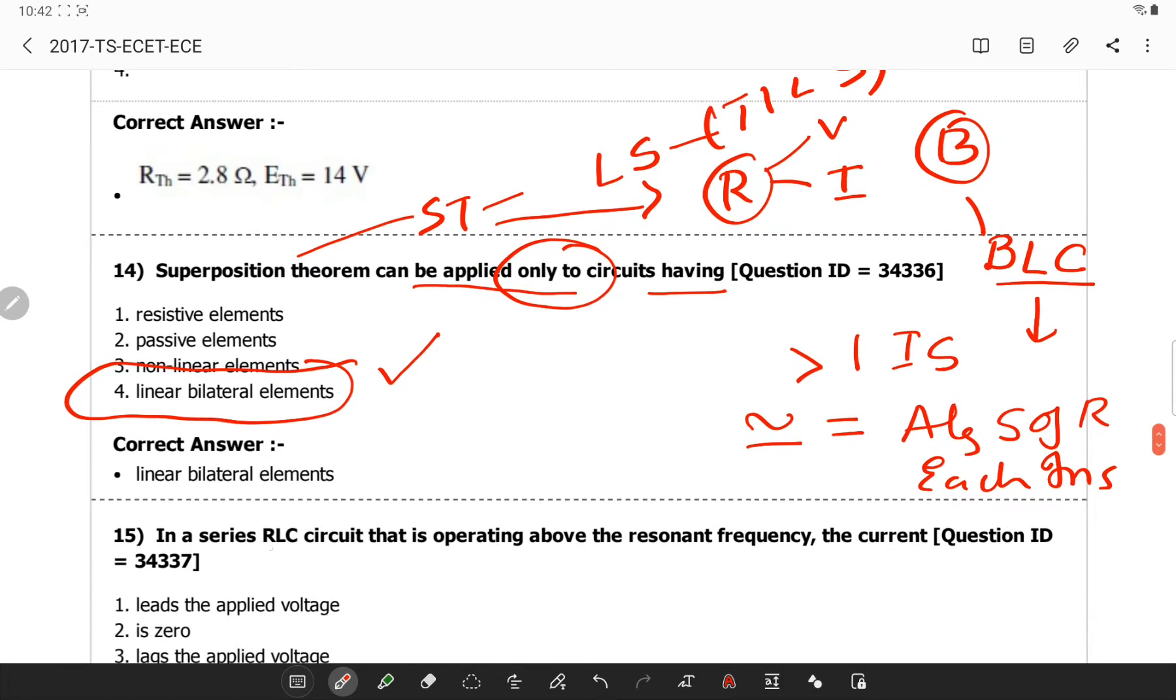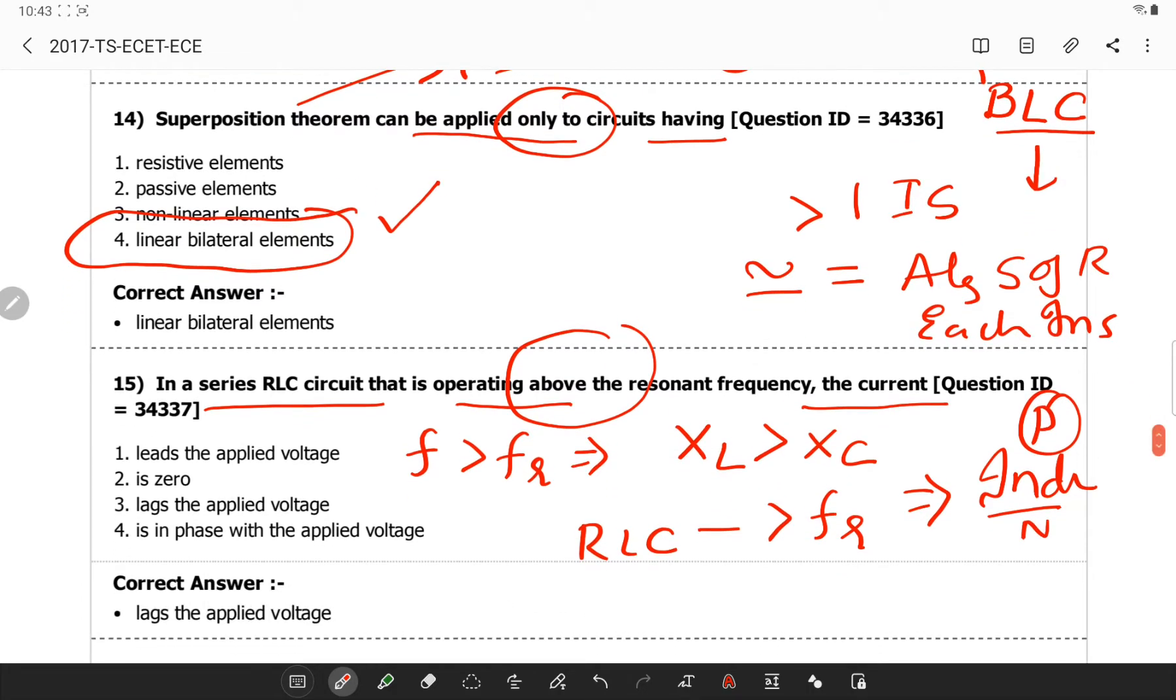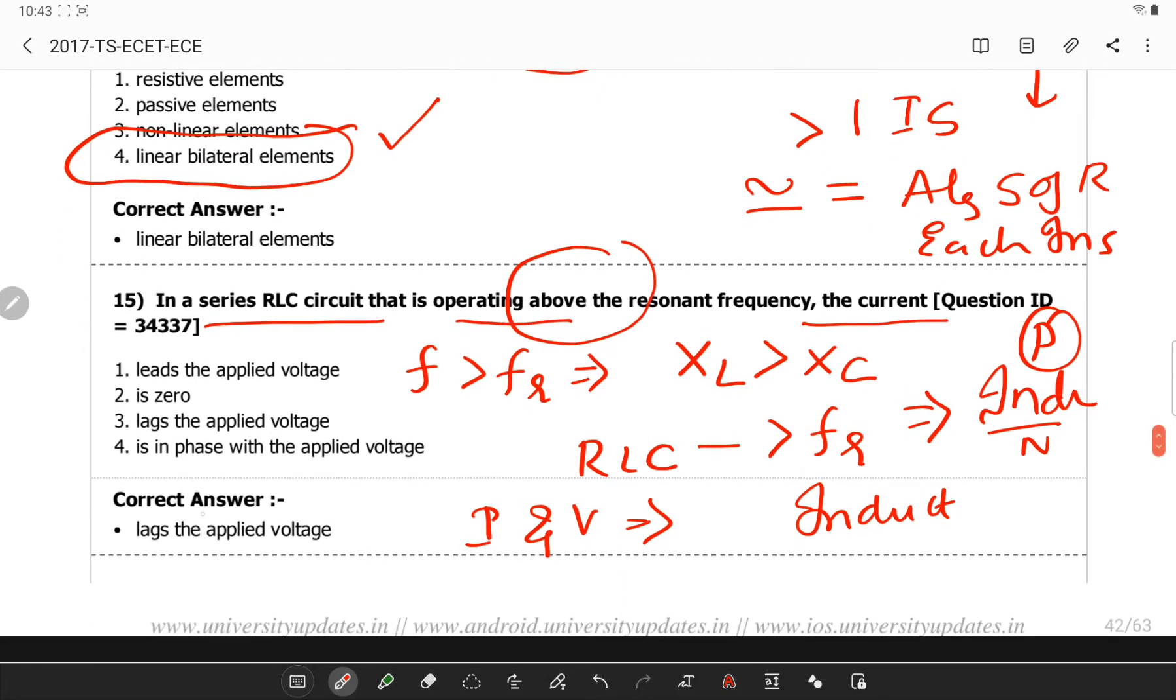In a series RLC circuit that is operating above the resonant frequency, the current will be. When the frequency is greater than the resonant frequency, inductive reactance will be greater than capacitive reactance. Therefore, RLC operating greater than resonant frequency will be behaving purely inductive in nature. The phase difference between current and voltage will be same as in the circuit of a inductive circuit. Therefore, I can simply say current will be lagging the applied voltage.